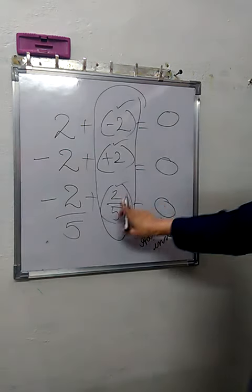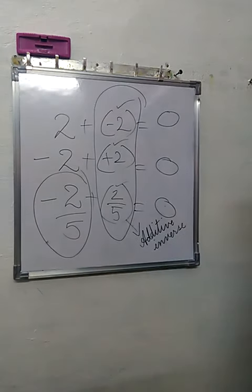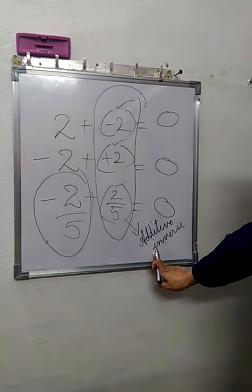If 2 by 5 is a rational number, then minus 2 by 5 is its additive inverse. Same goes with integers and whole numbers.